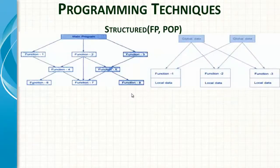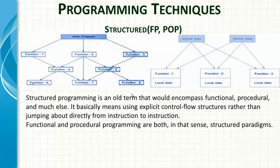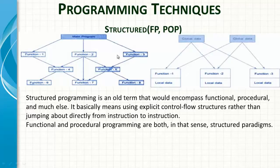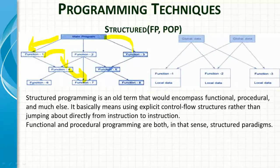In the very beginning there was structured programming. In structured programming there were two important aspects: functional programming and procedural programming. In functional programming, everything was embedded inside functions. There was local data associated with each function and some global data maintained alongside. The program would start at a main point and then flow from function to function in a chain.